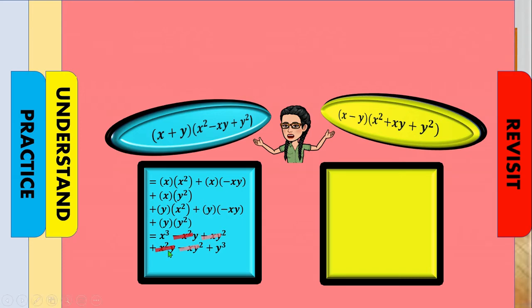Lastly, y times y squared is y cubed. Now we can add the additive inverses: negative x squared y and x squared y give zero, and xy squared and negative xy squared give zero. That leaves us with x cubed plus y cubed.